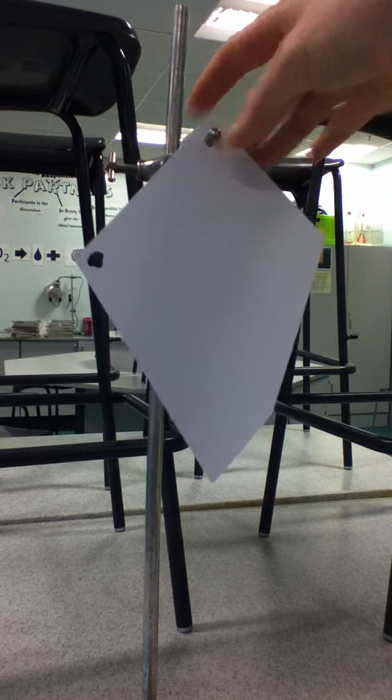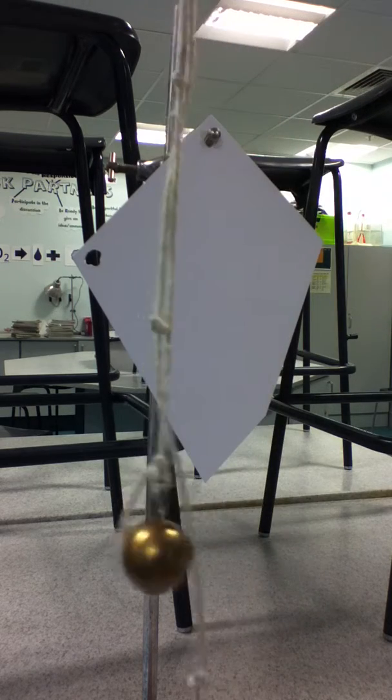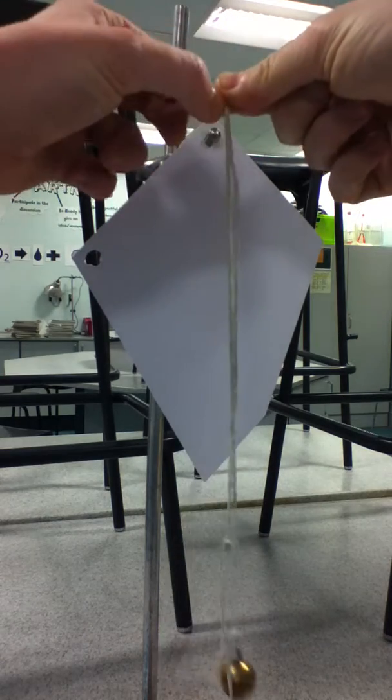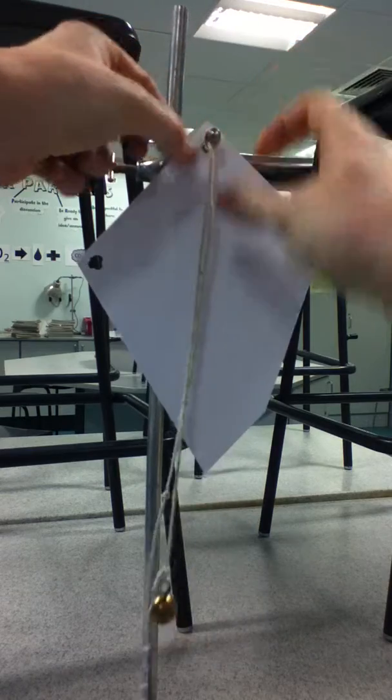Once you've hung that onto your clamp stand, you then need a plumb line, which is quite simply a mass on the end of a string. And we hang that in front of the object.